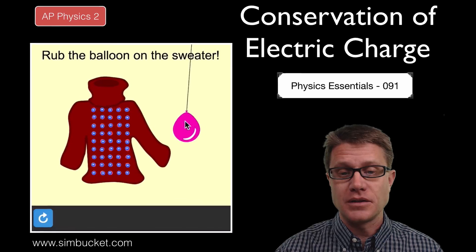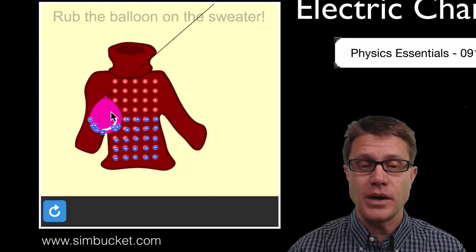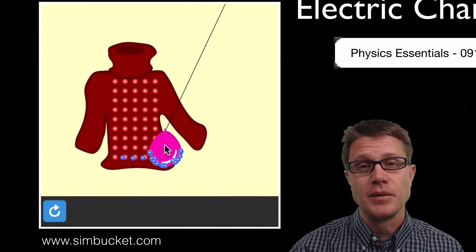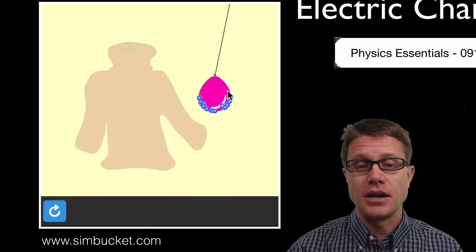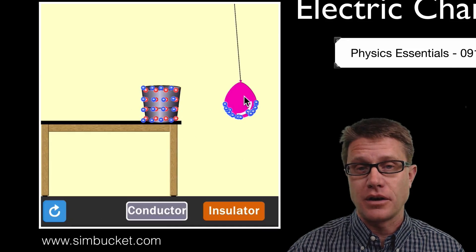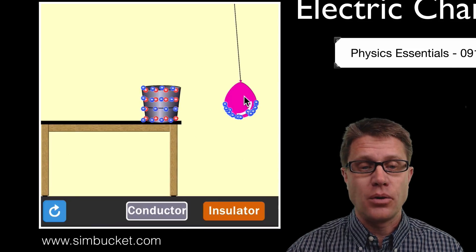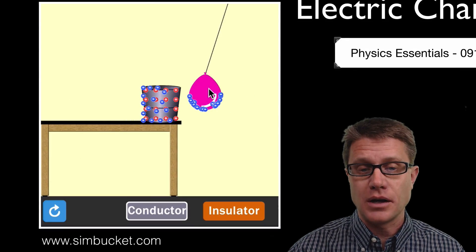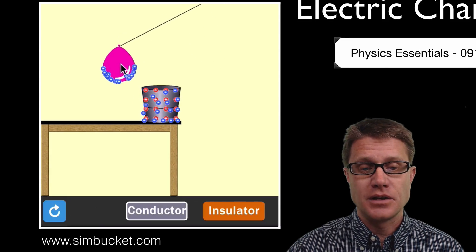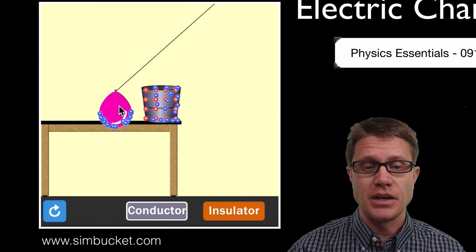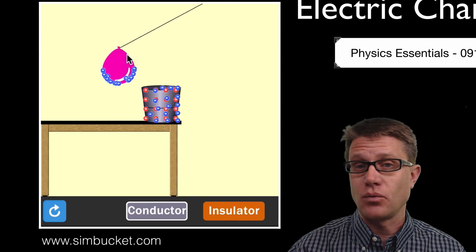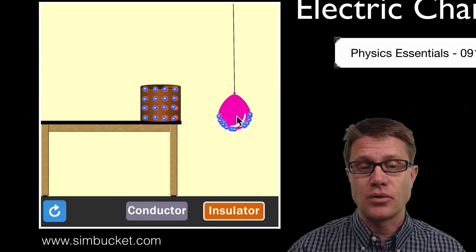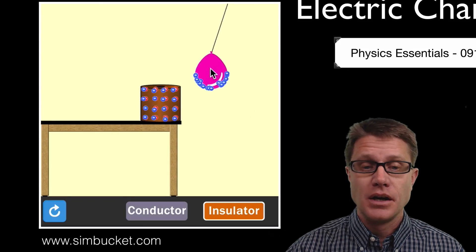What I am going to do is take a balloon and rub it on a sweater. What it is going to do is pick up the electrons — it is going to pick up a negative charge. Now if I hold that next to a conductor, like a bucket, it will be drawn to it. The reason why is that it is pushing those negative charges away, which can move in a conductor, and so it is drawn towards the positive charge.